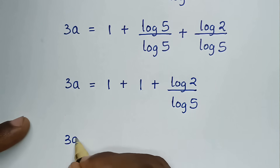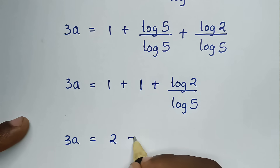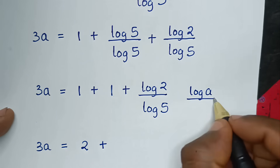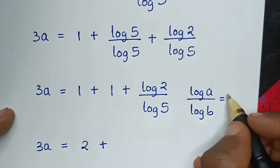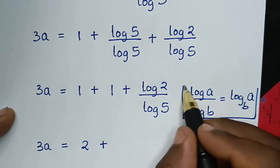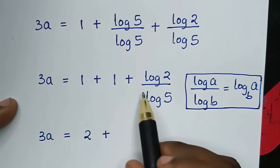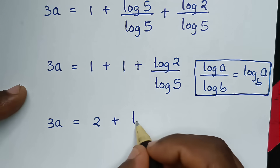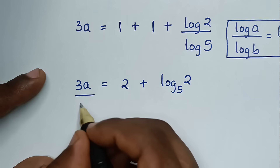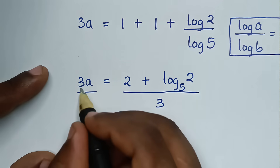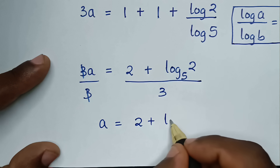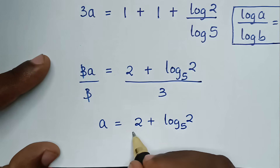Then 3a is equal to 1 plus 1, which is 2, plus log of 2 over log of 5. Now log of 2 over log of 5 is in the form of the rule log a over log b equals log of a base b, so it becomes log of 2 base 5. Then we divide both sides by 3, and this gives a is equal to 2 plus log of 2 base 5, all over 3. This is the final answer for the value of a.